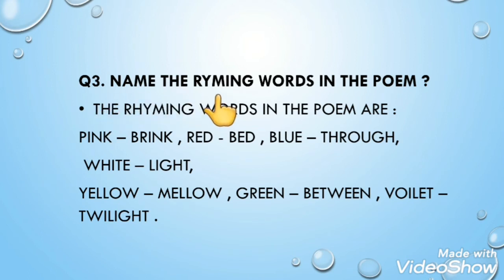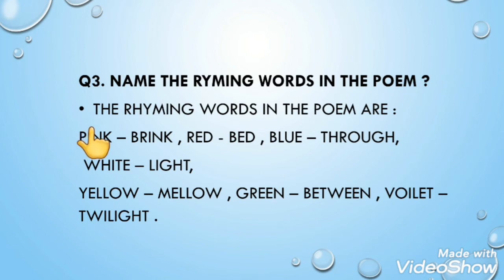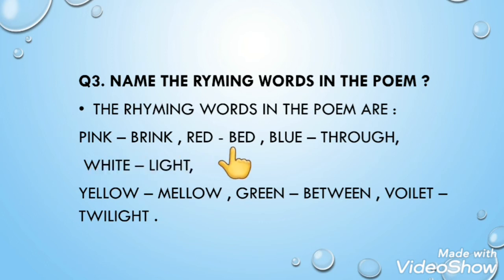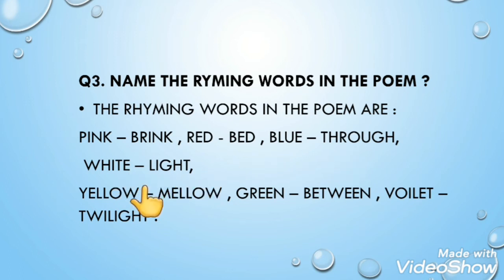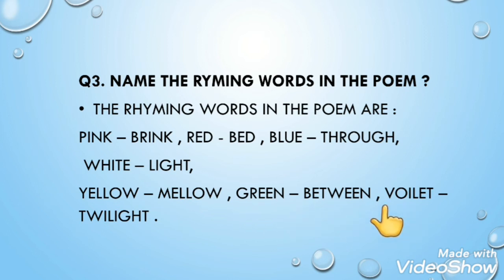Question number 3: name the rhyming words in the poem. In this question, we have to mention the rhyming words of the poem. The rhyming words are: pink and brink, red and bad, blue and true, white and light, yellow and mellow, green and between, violet and twilight.